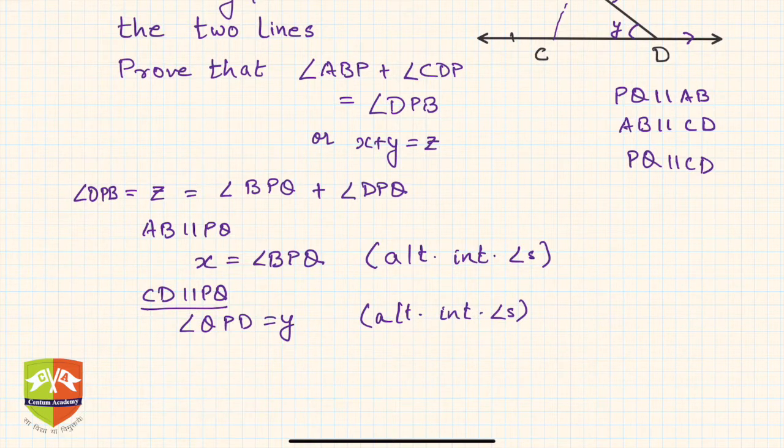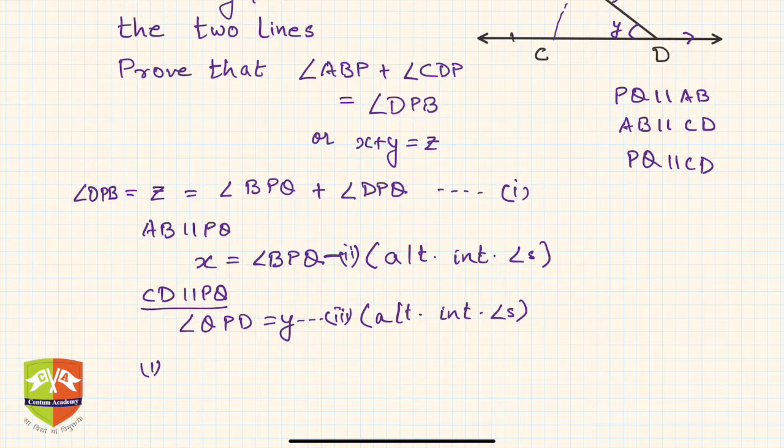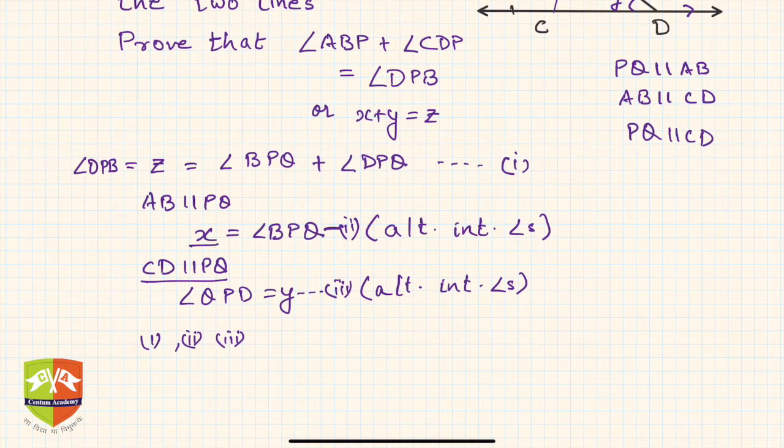Now if you see z, let's say this was angle one, so angle one, two, and three. From one, two, and three, what can we say? We can replace BPQ by x and DPQ, or QPD,